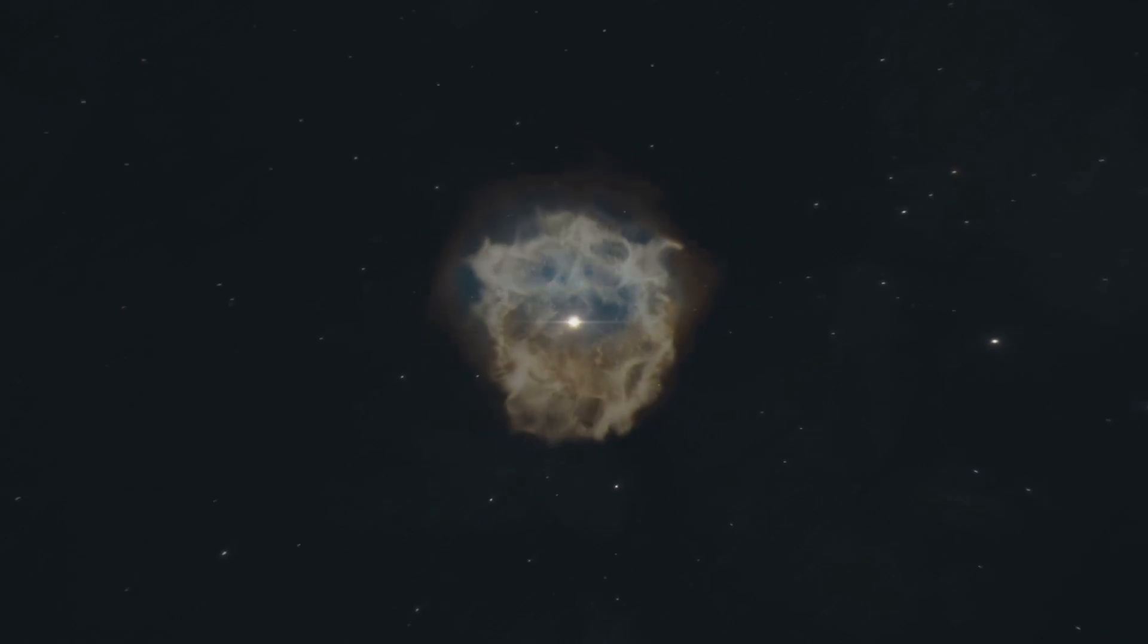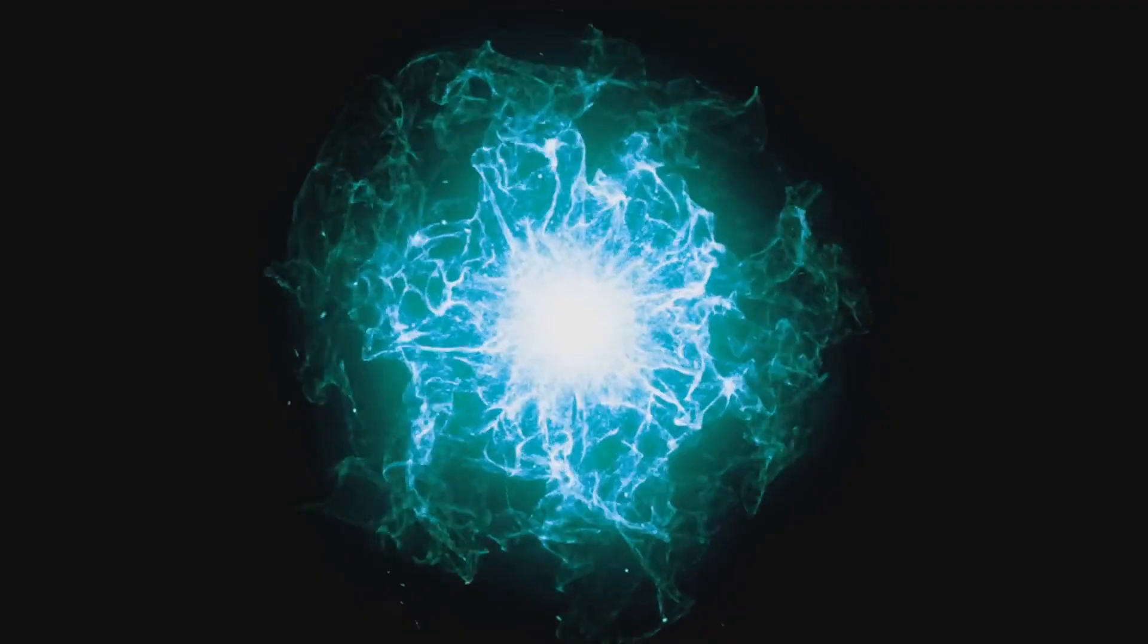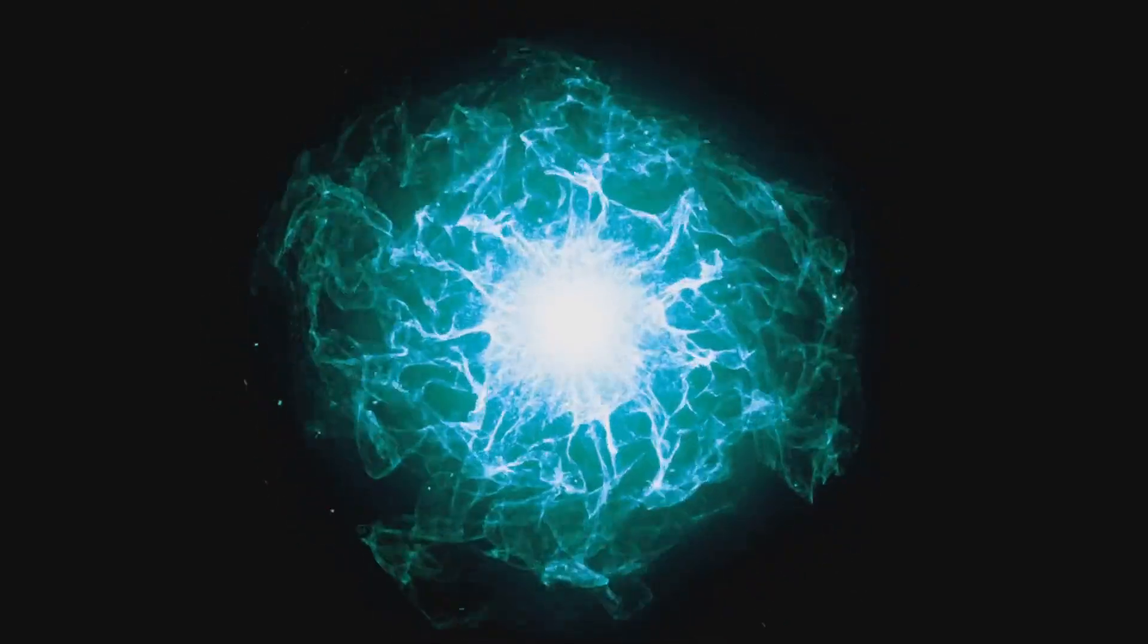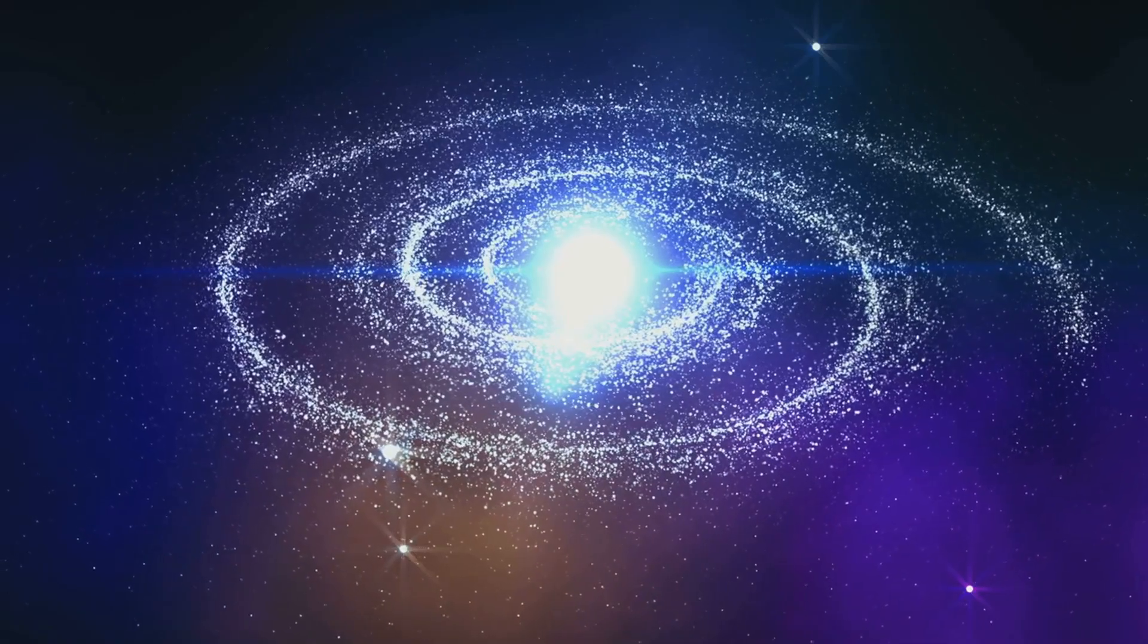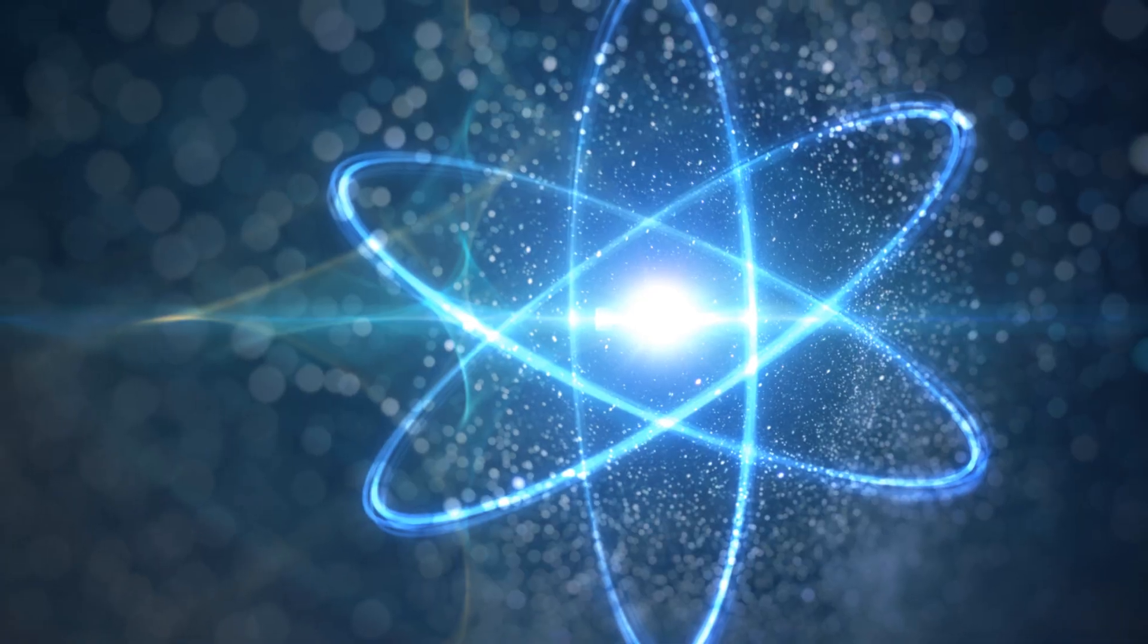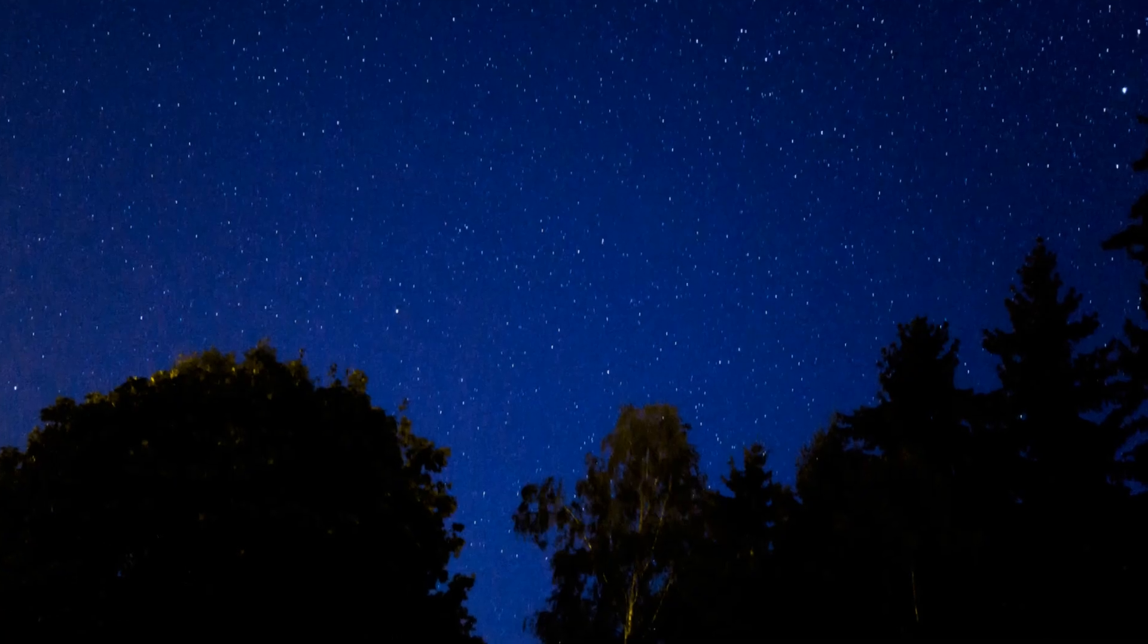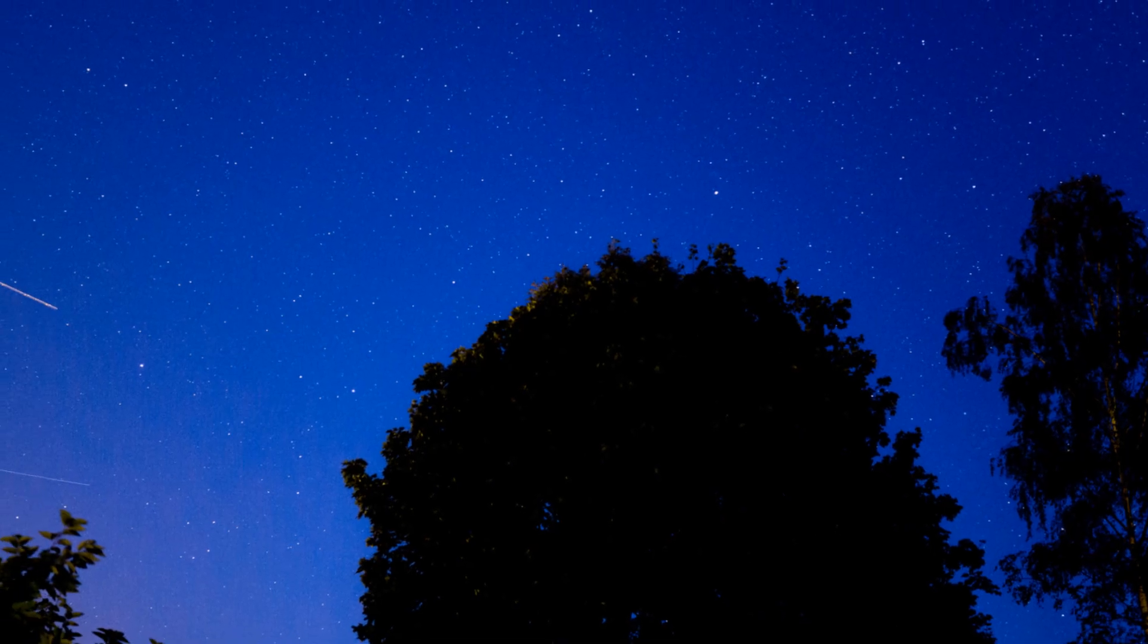When the core gets hot enough, a process called nuclear fusion begins. This is where the magic happens. Hydrogen atoms are squashed together under immense pressure and heat, creating helium and releasing energy in the process. This energy is what makes stars shine. But the story doesn't end there. The process of nuclear fusion in stars doesn't just stop at creating helium. As stars age and evolve, they start to fuse heavier and heavier elements, all the way up to iron.